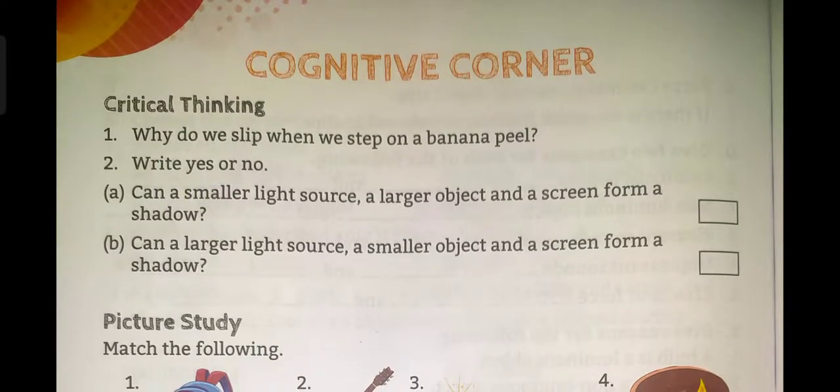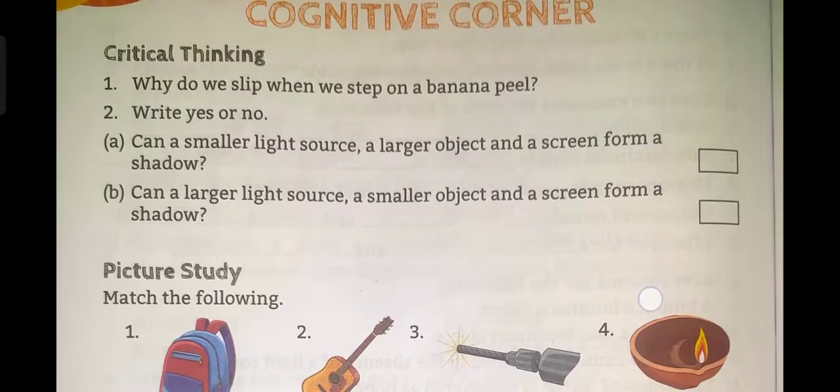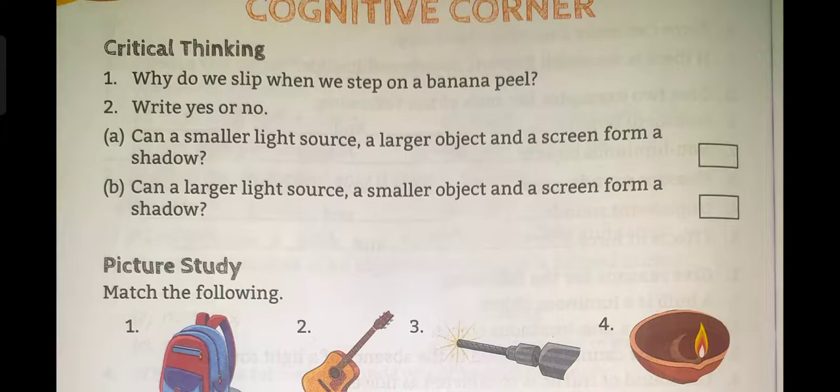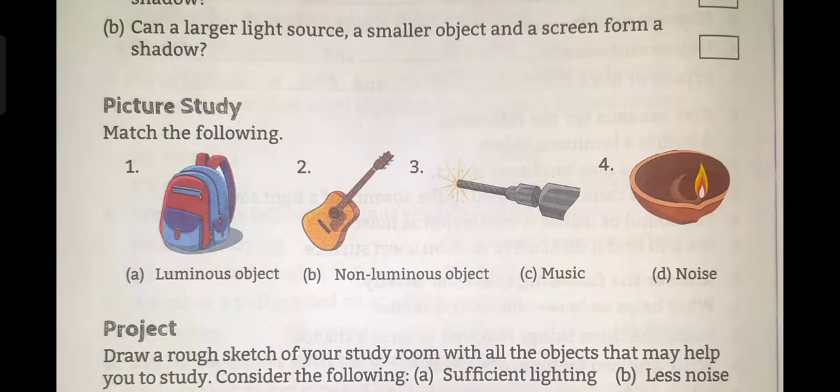Can a smaller light source, a larger object, and a screen form a shadow? And a larger light source, a smaller object, and a screen form a shadow?